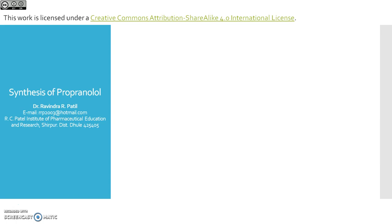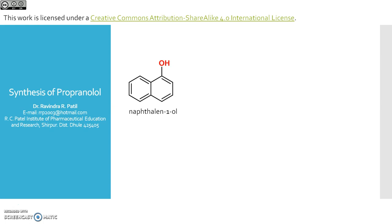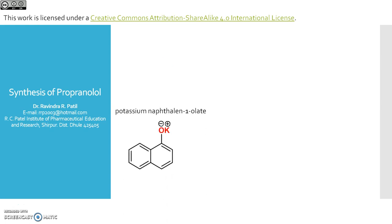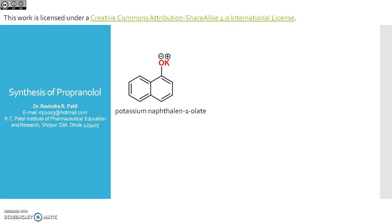Let us begin with the synthesis of propranolol, which is synthesized starting with 1-naphthol. 1-Naphthol on reaction with potassium hydroxide gives the potassium salt of naphtholate, which then reacts with epichlorohydrin. The naphtholate ion attacks on the carbon atom bearing the chlorine substituent.